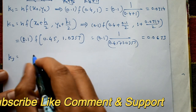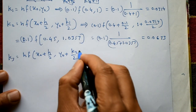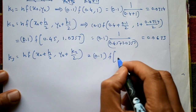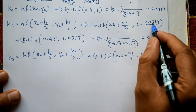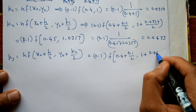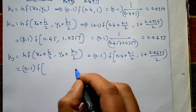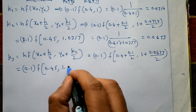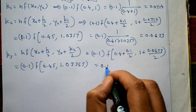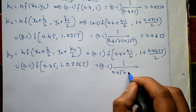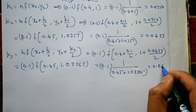For k3, k3 = h · f(x₀ + h/2, y₀ + k2/2) = 0.1 · f(0.45, 1 + 0.0673/2) = 0.1 · f(0.45, 1.03365). Using f(x,y) = 1/(x+y) = 1/(0.45 + 1.03365), we get k3 = 0.0674.